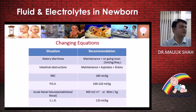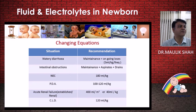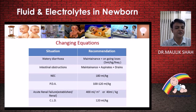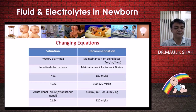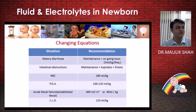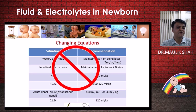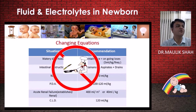This is a day-to-day, every-minute changing equation in preterm newborns. If a baby develops watery diarrhea, add ongoing loss support beyond maintenance. If there is intestinal obstruction, add aspirate and drain volumes. In NEC, fluid requirements increase. In PDA, restrict fluid. In acute renal failure, restrict to 400 ml/m² or 40 ml/kg per unit policy. In chronic lung disease, also restrict. There is no cookbook formula — the equation changes constantly.